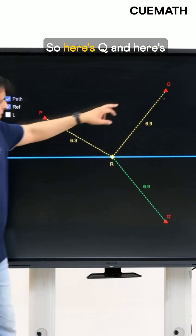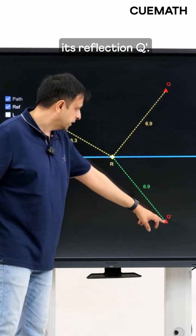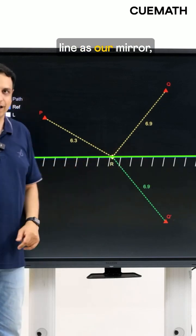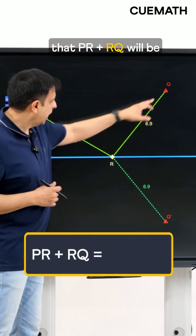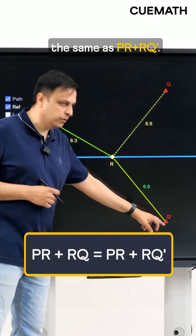So here's Q and here's its reflection Q dash if you think of this line as a mirror, and what this means is that PR plus RQ will be the same as PR plus RQ dash.